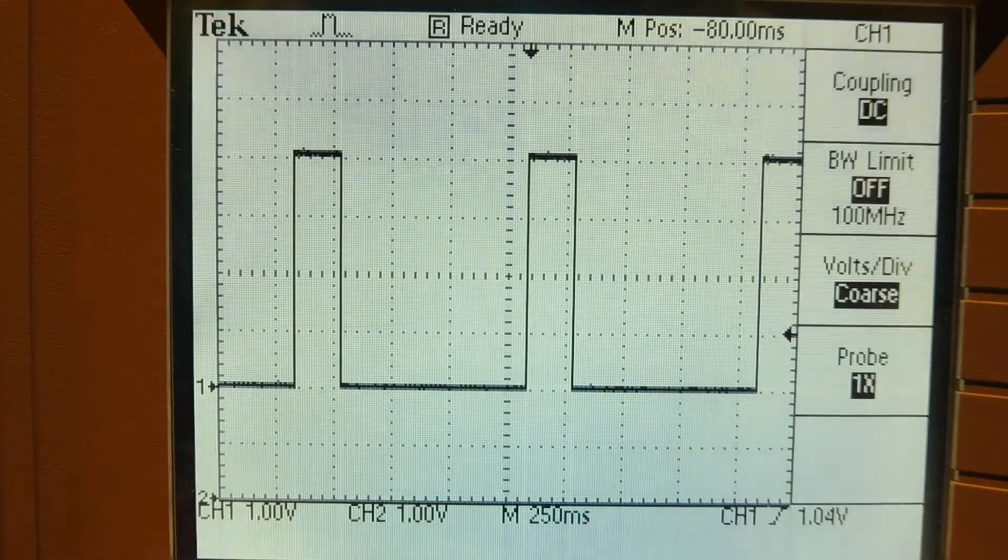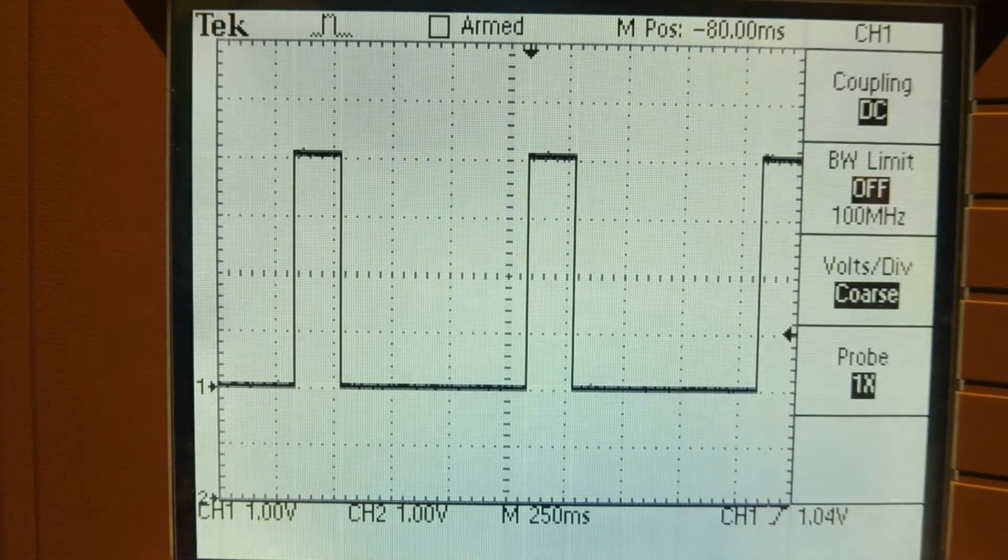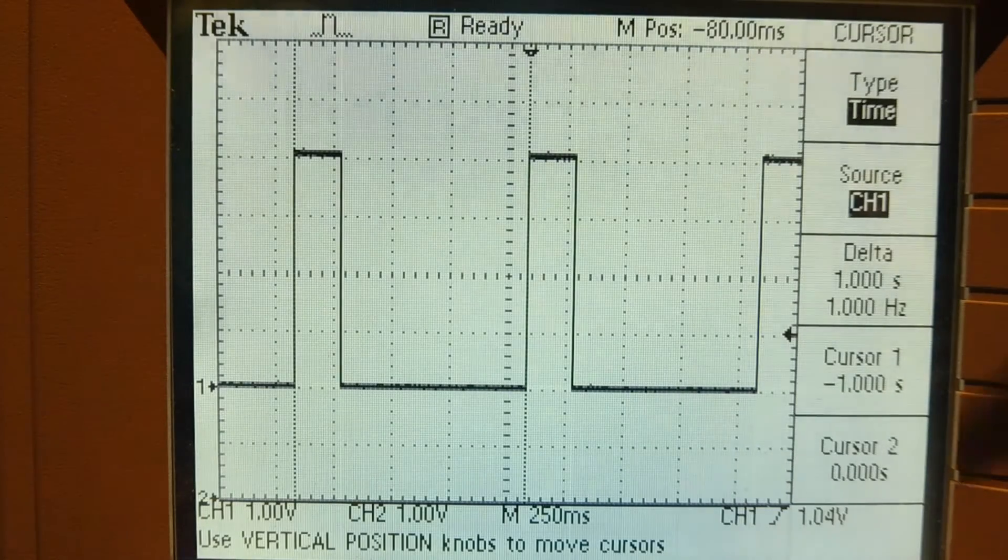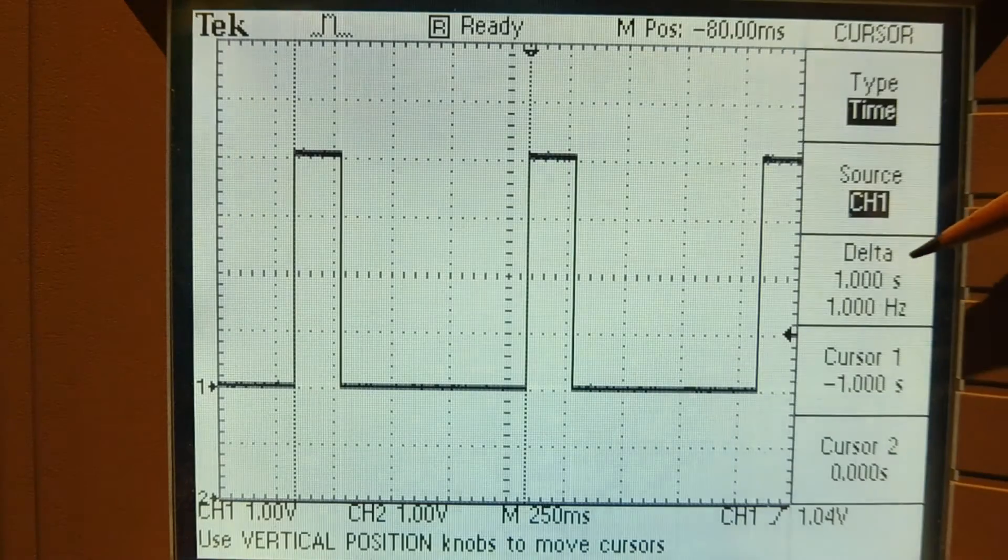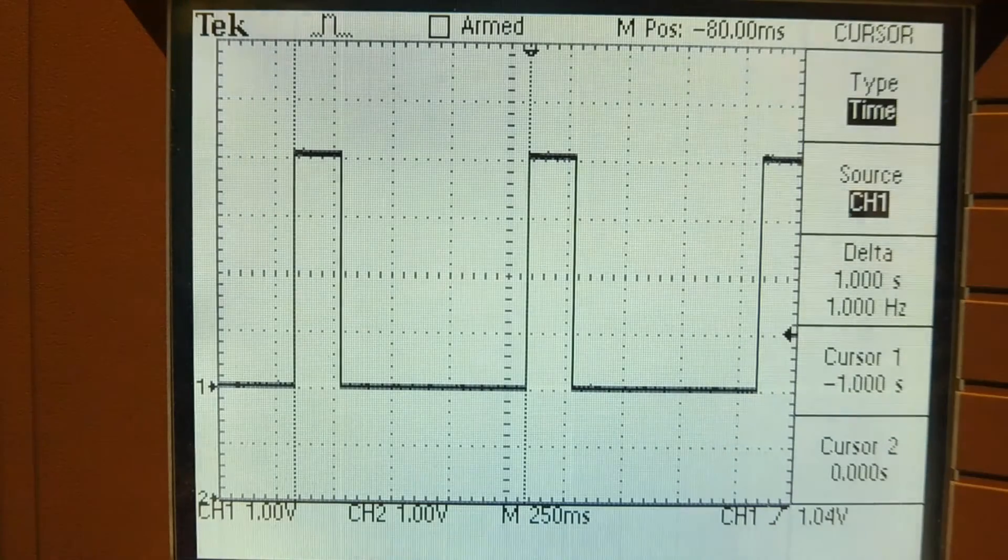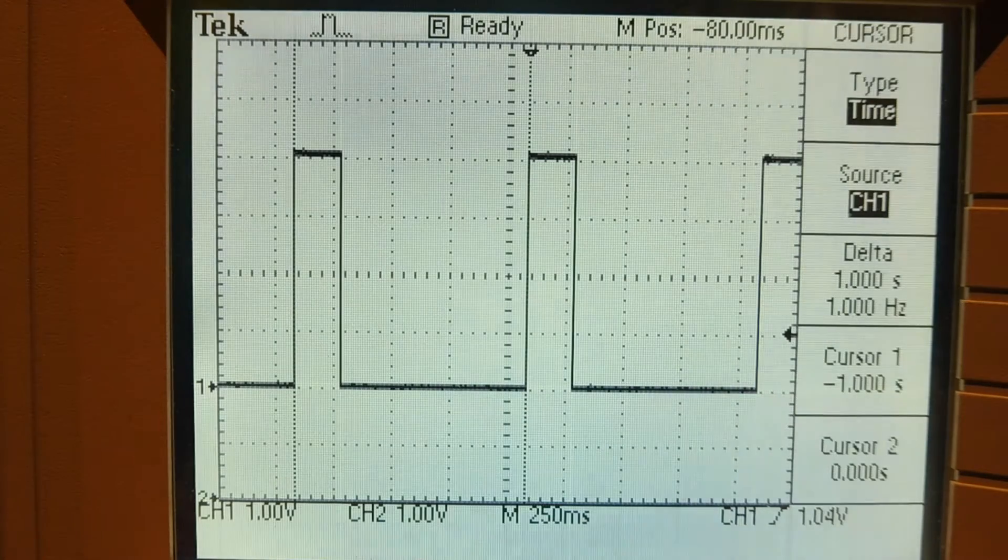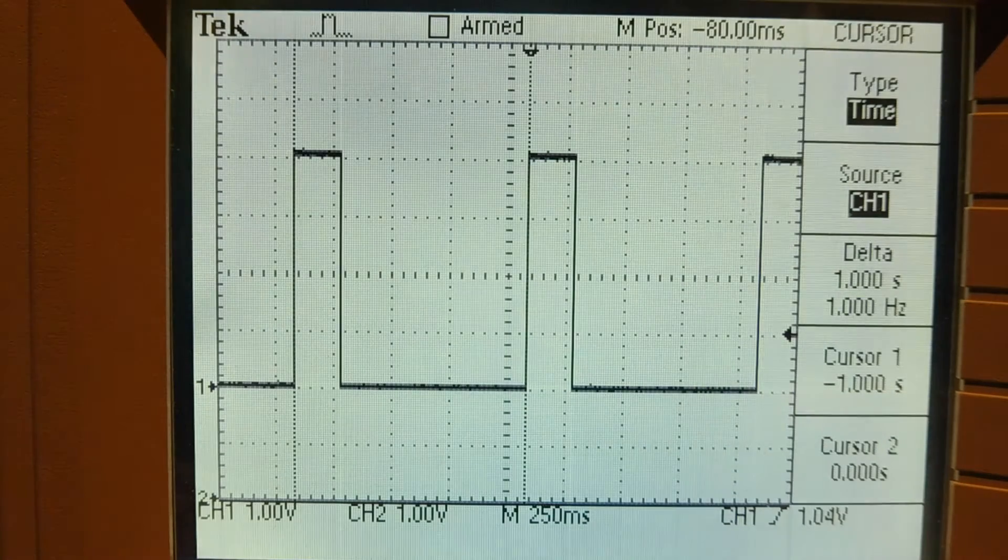Now it may not look like much, but it's pretty incredible. And if I put my cursors on, you could see between this edge and this edge, we got exactly one second between the two cursors. So next we'll look at some applications, where we can use this precise and accurate timing pulse.